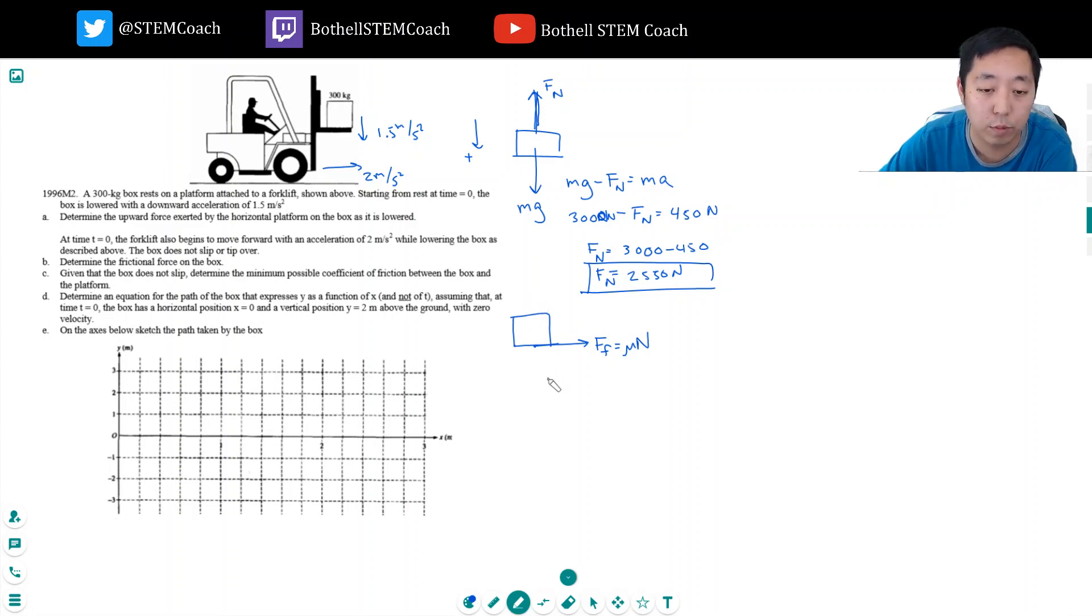The net force in the x-direction is mu times n, and that has to equal m times a, the acceleration in the x-direction, which we already know. So the coefficient of friction has to equal ma over the normal force. Sorry, I keep... this is mu times the normal force. I'm trying to get used to writing it as fn because I've seen that is more common from a lot of teachers.